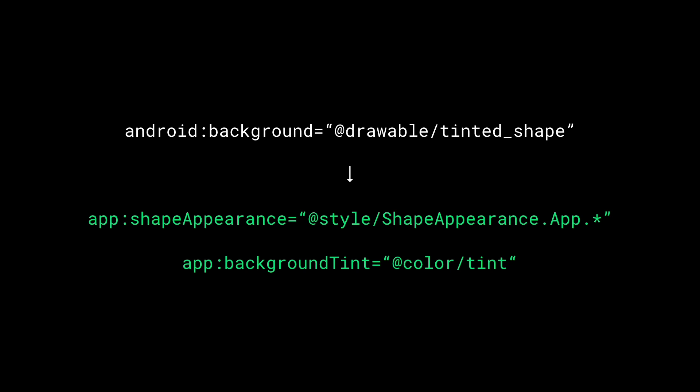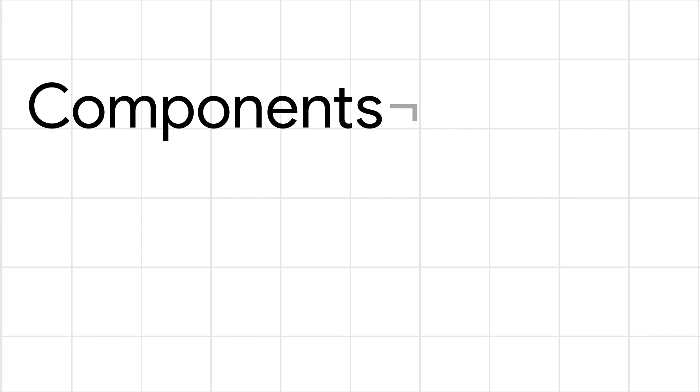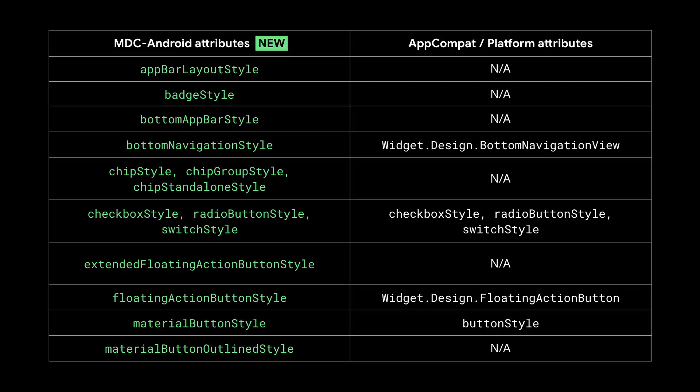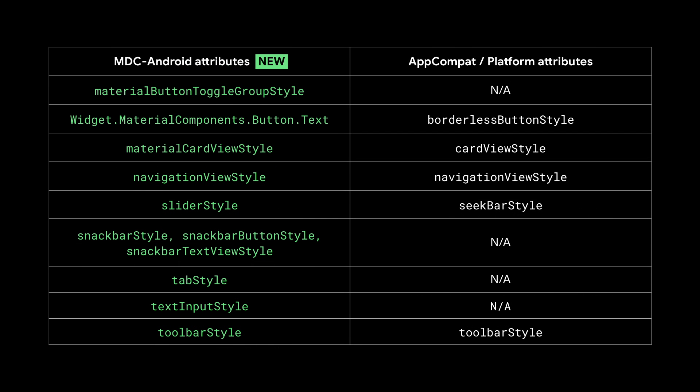If the widget is part of MDC Android, the backing MaterialShapeDrawable and corresponding attributes should cover most cases. MDC Android also offers default styles for the new widgets that it offers. Here's how these new widget attributes map to the old AppCompat attributes and which ones you can keep, replace, or remove.